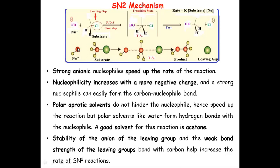Let's say the nucleophile is the hydroxyl group — this red circle indicates the oxygen atom which has a negative charge and is therefore an electron-rich center. The substrate is a primary alkyl halide, for example with a C–Cl bond, which is a polar covalent bond. Cl is the leaving group. When the hydroxyl group starts approaching this carbon, which is partially positively charged, it gives a transition state where the bond between the nucleophile and carbon is partially formed and the bond between carbon and the leaving group is partially broken.